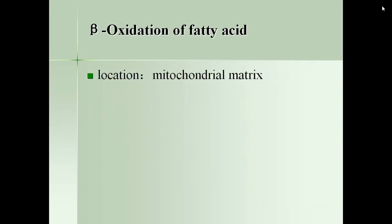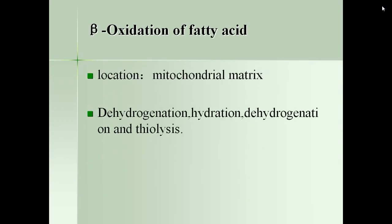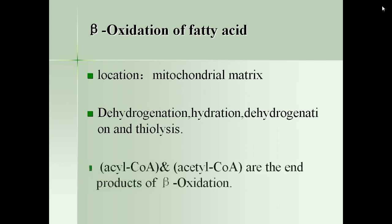Beta oxidation: location — mitochondrial matrix. Beta oxidation occurs in the mitochondrial matrix. There are 4 types of reactions in sequence: first, oxidation (dehydrogenation); then, hydration; then, a second oxidation (dehydrogenation); and finally, thiolytic cleavage. At the end of beta oxidation we have acetyl-CoA and a shorter fatty acyl-CoA as end products.